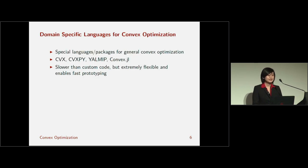In the past 10 years, DSLs, or domain-specific languages, for convex optimization have risen in popularity. Already tens of thousands of users have been using software like CVX in MATLAB, CVX-py in Python, YALMIP, another MATLAB package, and convex.jl in Julia to solve their problems.